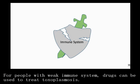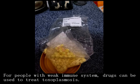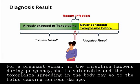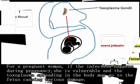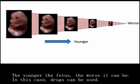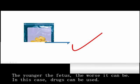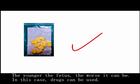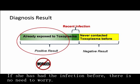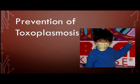For people with a weak immune system, drugs can be used to treat Toxoplasmosis. For a pregnant woman, if the infection happens during pregnancy, she is vulnerable and the Toxoplasma spreading in the body may reach the fetus, causing serious damage. The younger the fetus, the worse it can be. In this case, drugs can be used. If she has had the infection before, there is no need to worry.